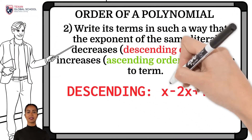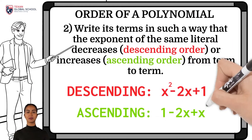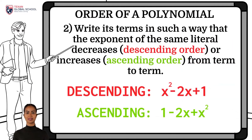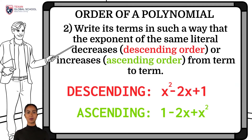Subsequently, we must write the terms so that the exponent of the same literal decreases (descending order) or increases (ascending order) from term to term. For example, the polynomial x squared minus 2x plus 1 is arranged in descending order, and the polynomial 1 minus 2x plus x squared is in ascending order.